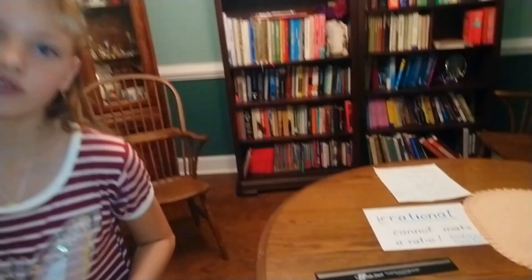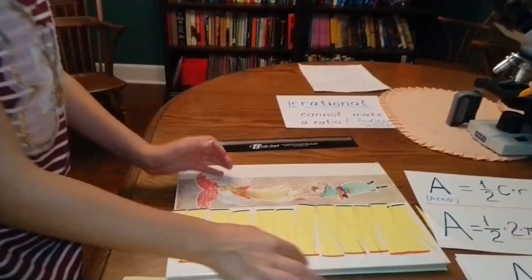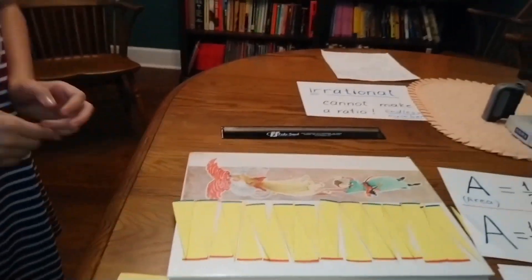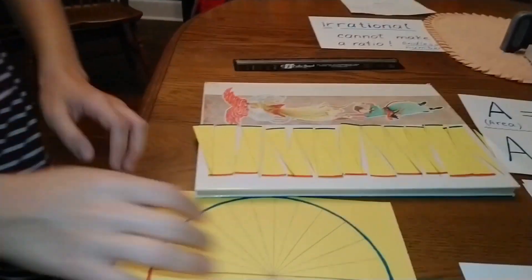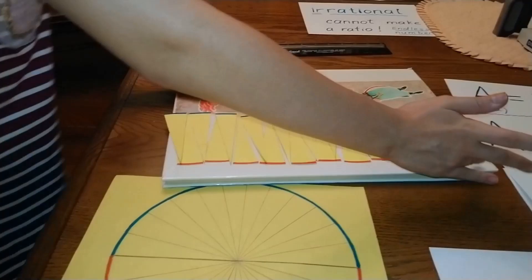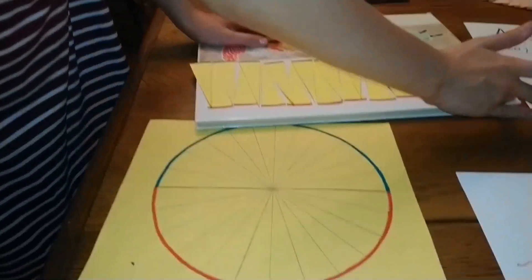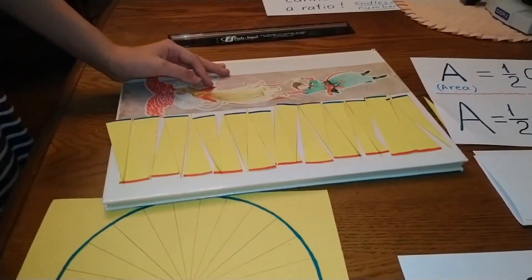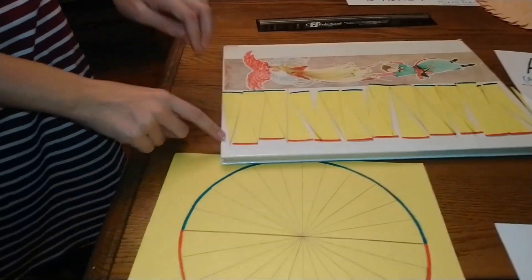Usually, when you find the area of a rectangle, you do length times width. But if you see here, you do half of the circumference, which I made red, and then times radius.